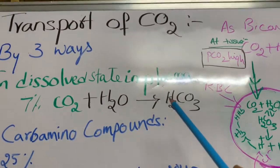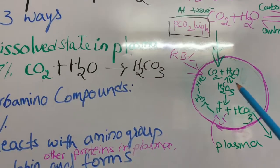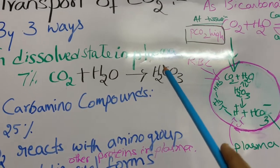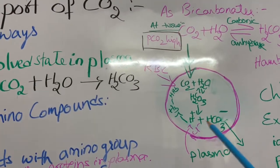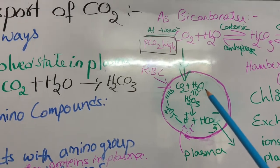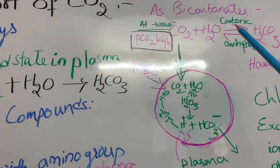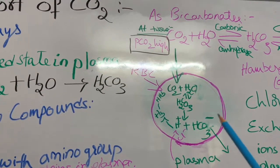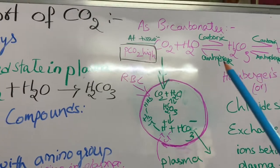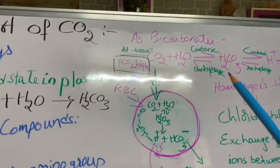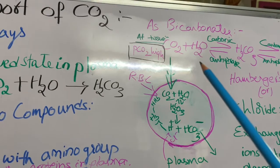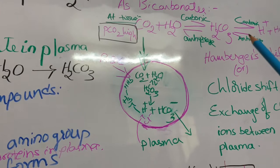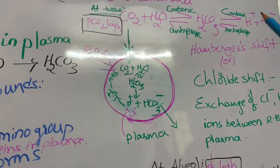Inside the RBC, carbon dioxide reacts with water and forms carbonic acid. In plasma, this reaction is very slow, but in the RBC the reaction is very fast due to the presence of an enzyme known as carbonic anhydrase. Because of this enzyme, seventy percent of carbon dioxide is transported as bicarbonate.